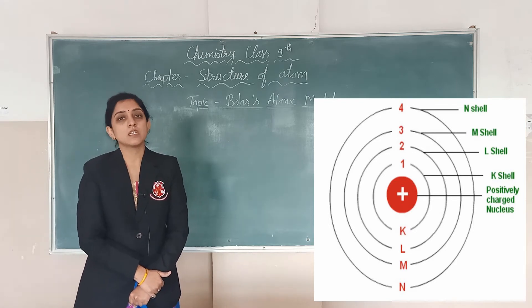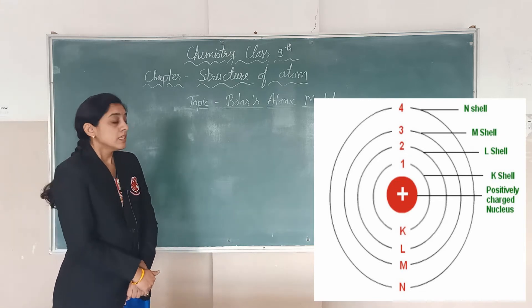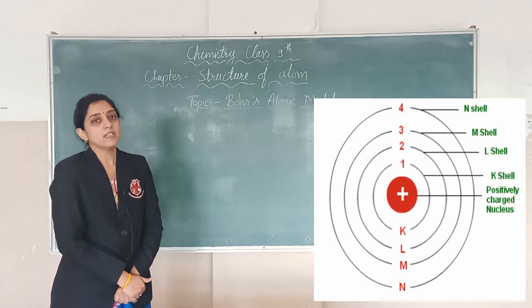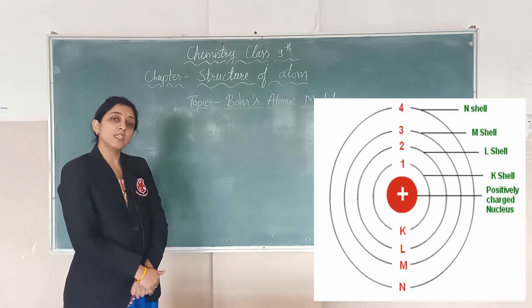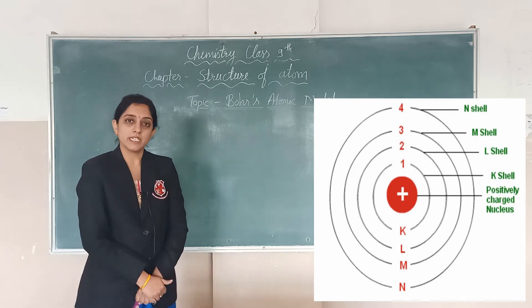So we will see in this, there are so many postulates. As you can see in this diagram, there are so many shells. So first postulate of Bohr's model, he said that atom is made up of three subatomic particles. First, electrons, which are negatively charged.